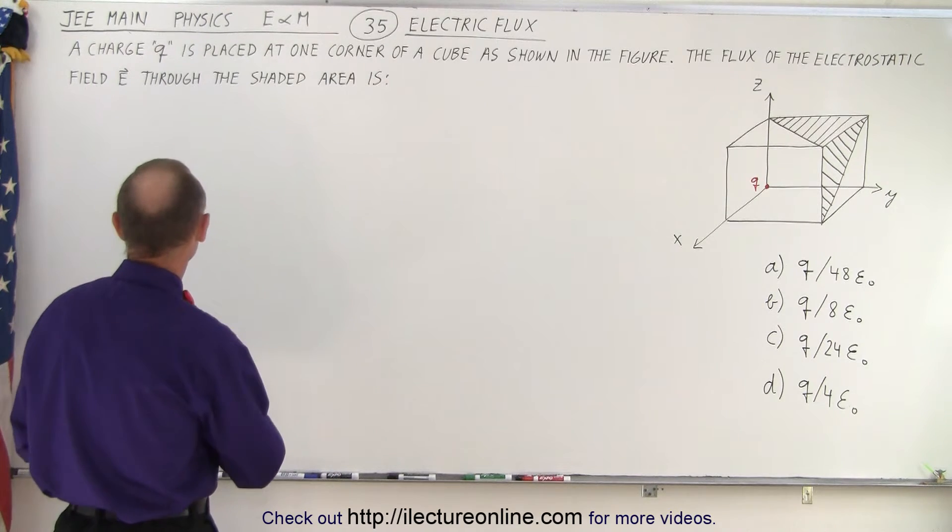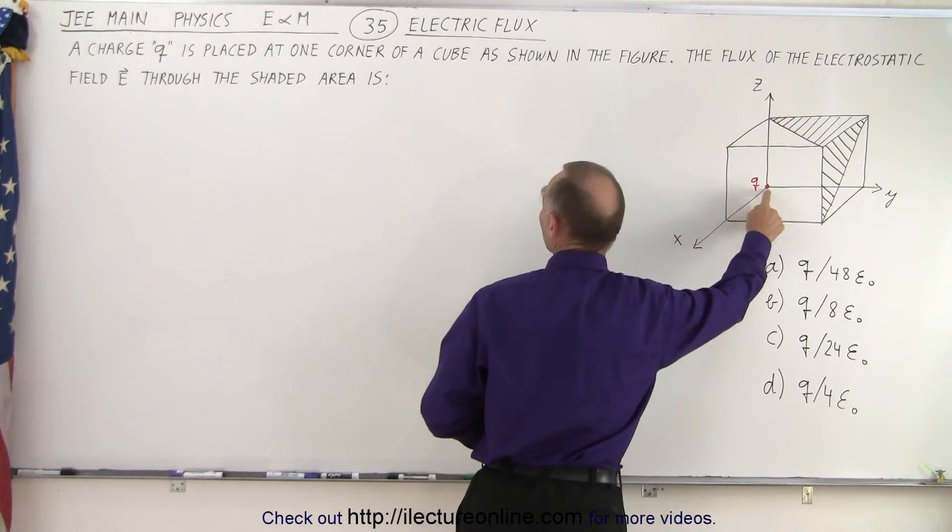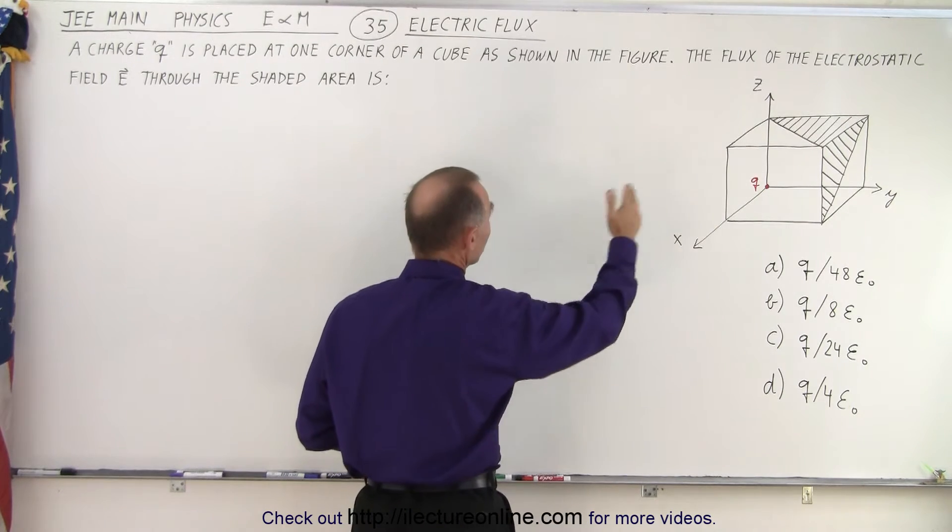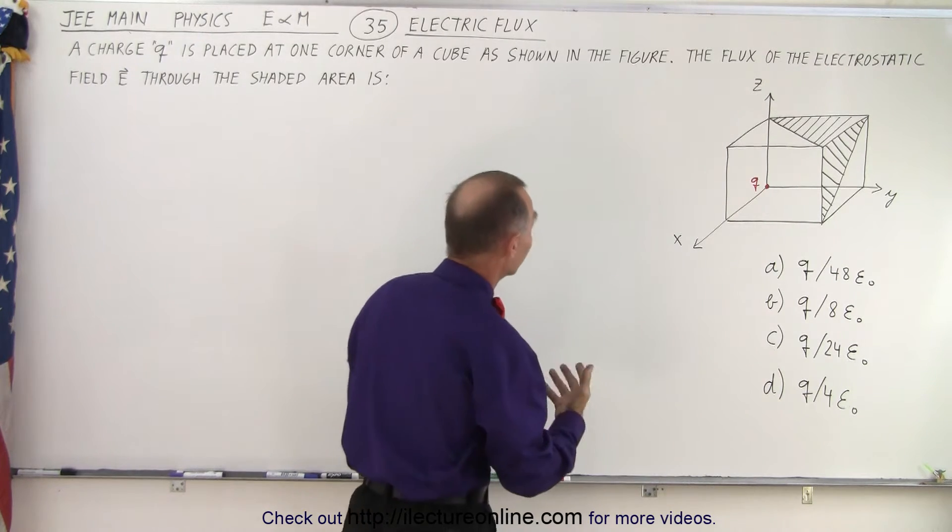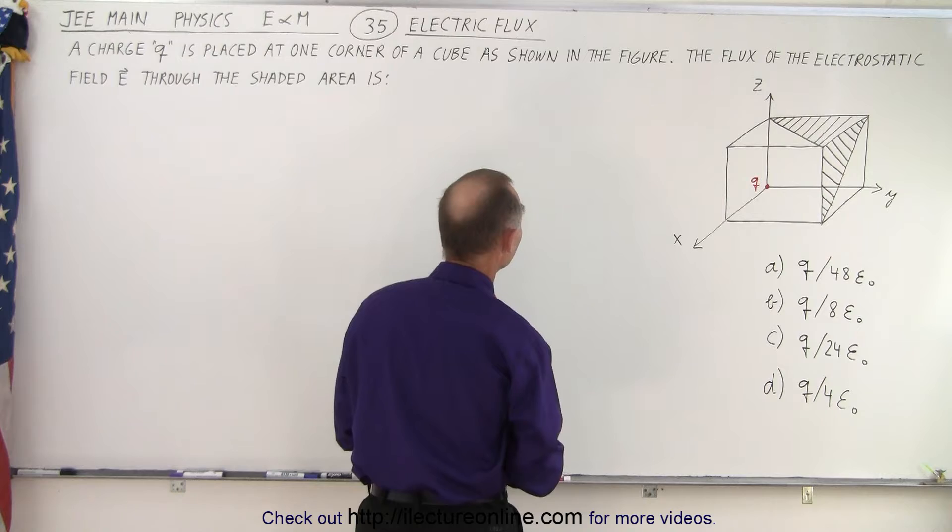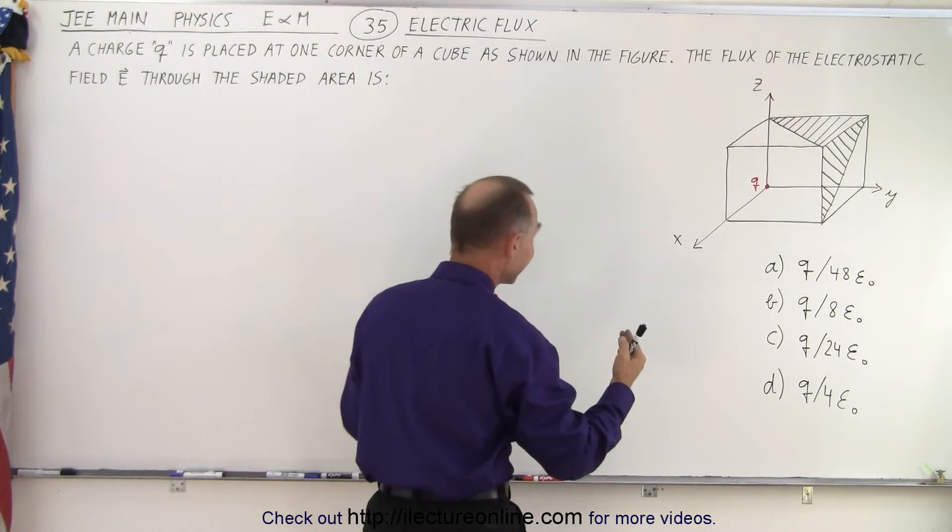It deals with electric flux and it says that a charge Q is placed at one corner of a cube as shown in the figure. So they were nice enough to give us a figure, although they kind of have to, otherwise it would be difficult to depict the problem. Well, the flux of the electrostatic field E through the shaded area is?